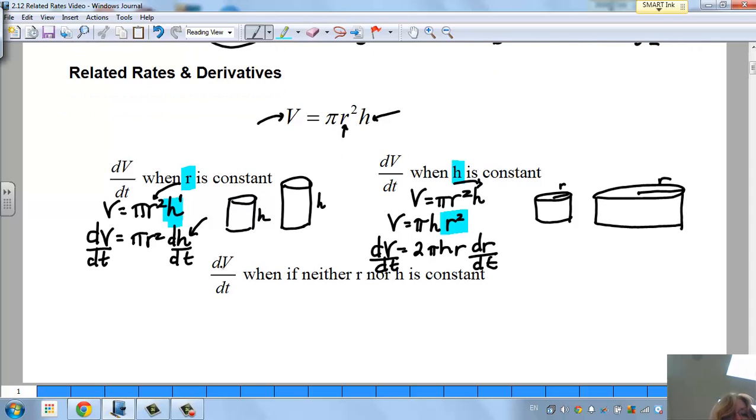Now it says, what is the, how does the volume change with respect to time if neither r nor h is constant? So if you looked at it, I have volume is pi r squared h. We've been doing derivatives this whole time, but if this is a variable and this is a variable, then I've got to do the product rule, because I can say that's my f and that's my g. If f is pi r squared, f prime is going to be 2 pi r dr. And then g is going to be h, so g prime is going to be 1 dh.